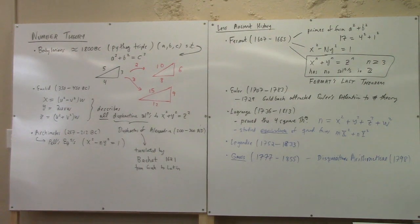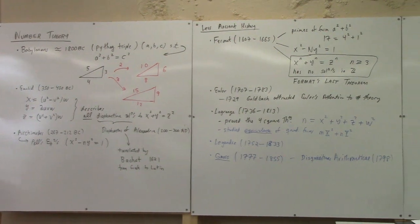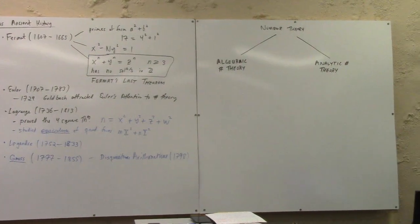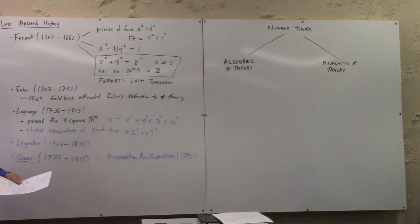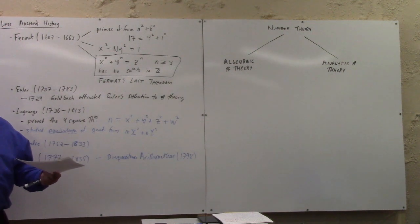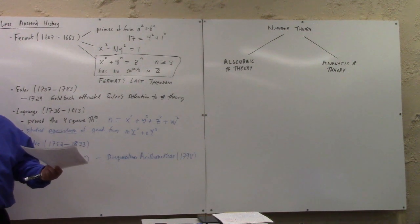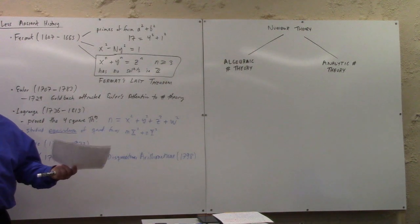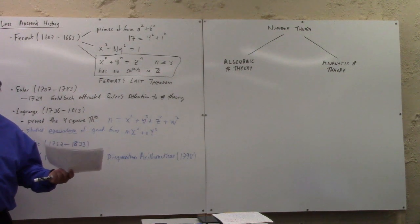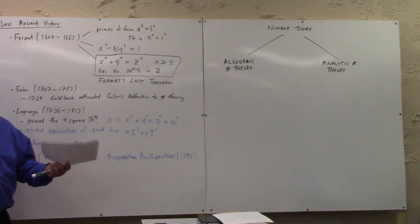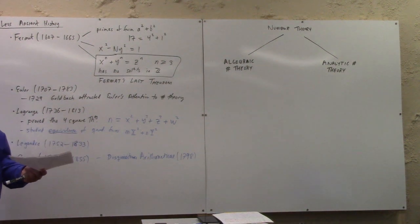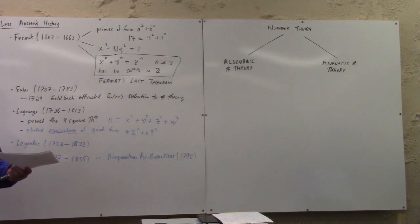This brings me to my next big picture comment here. I've given you a very quick snapshot of some of the questions and some of the names of major figures in number theory. But the big picture of number theory these days is there's essentially two directions you can go: algebraic number theory and analytic number theory. Algebraic number theory is kind of more where this course is centered.